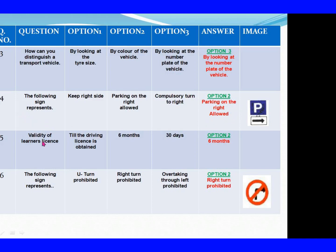Question 15: Validity of learner license. Option 1: Till the driving license is obtained. Option 2: 6 months. Option 3: 30 days. The right answer is Option 2: 6 months. Question 16: The following sign represents. Option 1: U-turn prohibited. Option 2: Right turn prohibited. Option 3: Overtaking through left prohibited. The right answer is Option 2: Right turn prohibited.